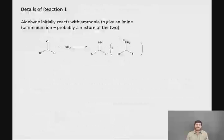Let's look at some of the details of the first reaction. This is not a detailed mechanism, just an overview of how this reaction works. So the aldehyde is initially going to react with ammonia to give an imine. It's actually probably a mixture of the imine and the iminium ion, especially if you do this under slightly acidic conditions, which you would normally do to form an imine.